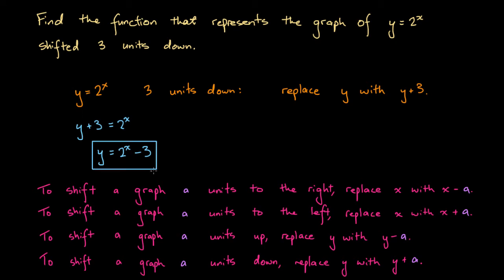You could go ahead and graph this if you wanted, just to make sure that it is 3 units down from the graph of y equals 2 to the power of x. But we needn't do that, because we have these functional rules, and these rules allow us to quickly understand what a functional form looks like in certain circumstances. Because of that, we know that this is correct.